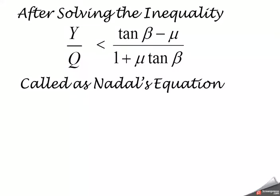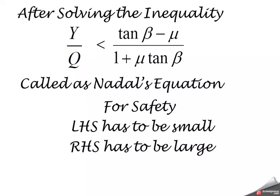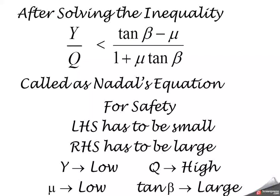For safety, left-hand side should be small and right-hand side should be large. It infers that horizontal force Y should be kept low. Vertical force should be kept high. Coefficient of friction between flange and rail should be low and tan beta, that is flange angle, should be large.